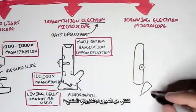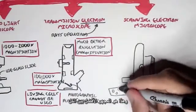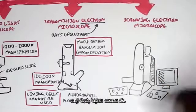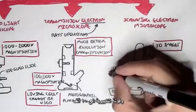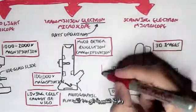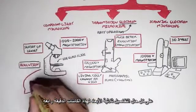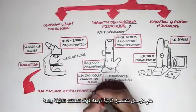The final one is the scanning electron microscope — probably the coolest microscope ever. It enables scientists to view microorganisms in 3D. It can only magnify up to 10,000 times; however, the detail of these microorganisms in three dimensions is awesome.